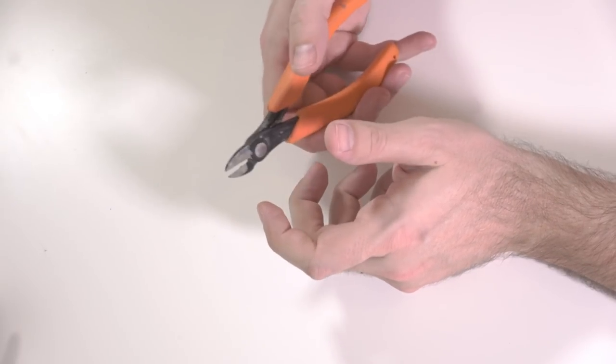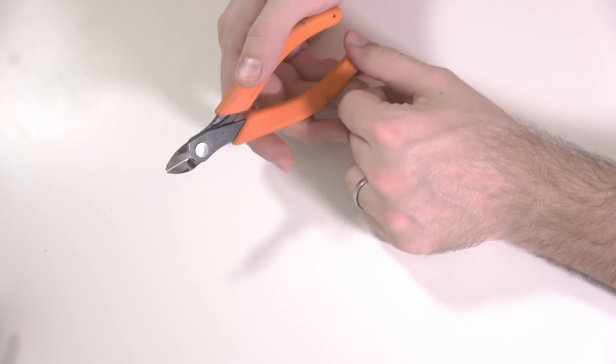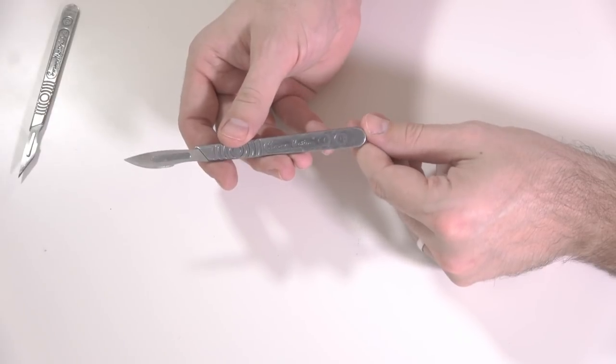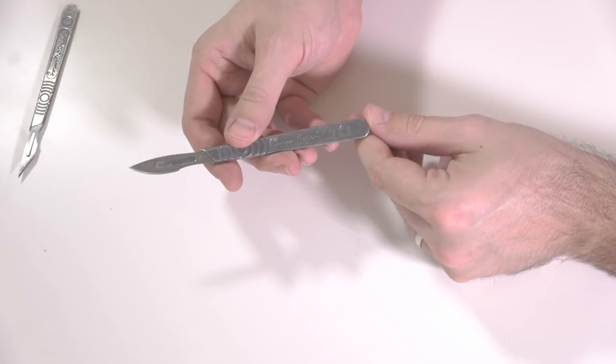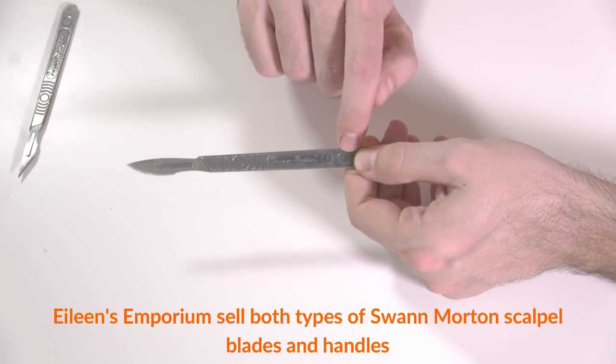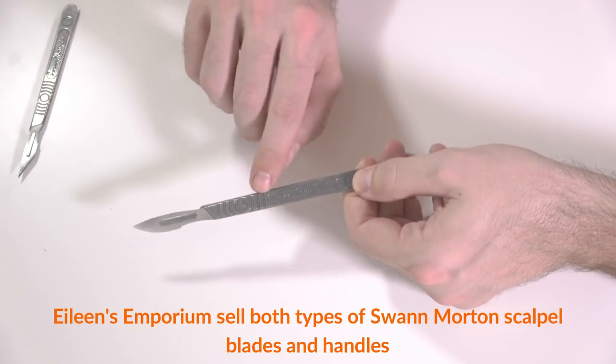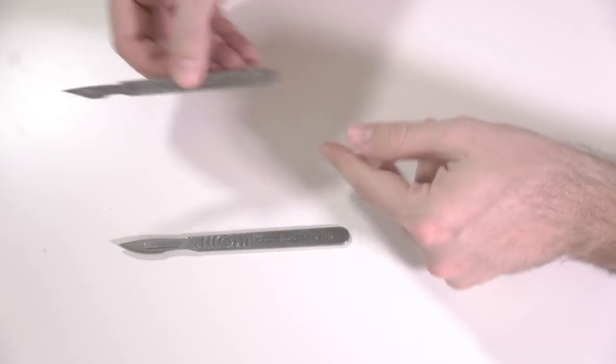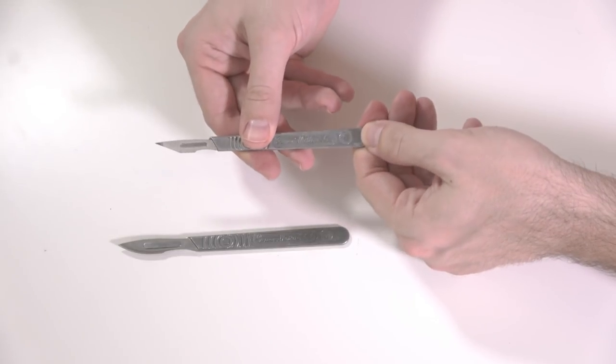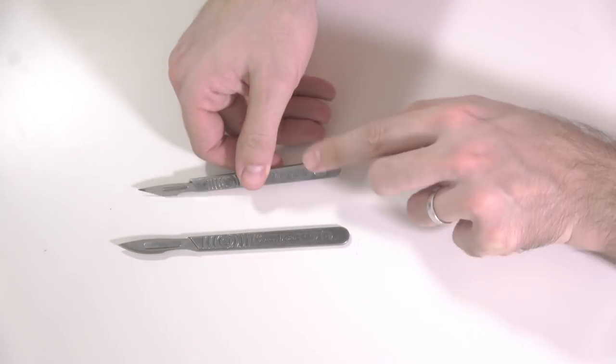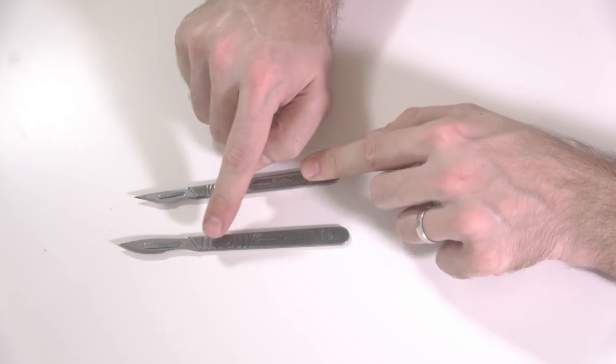The next tools that are essential in my opinion are scalpel blades. These are by Swan Morton. This is a number four handle, and this one is a number three handle. I've got two different blades that I like to use: a straight blade and a curved blade.